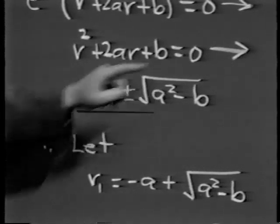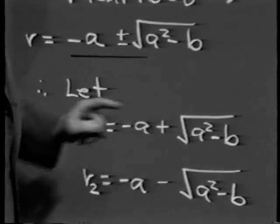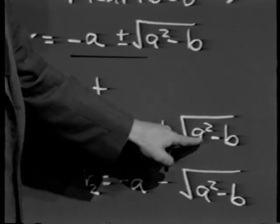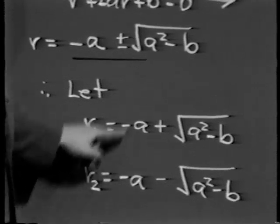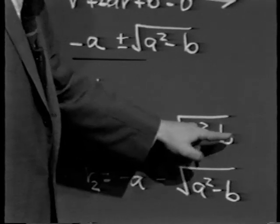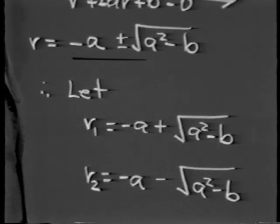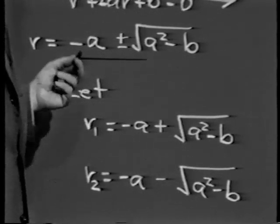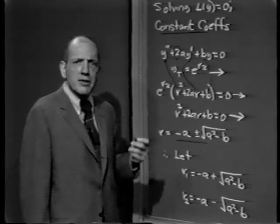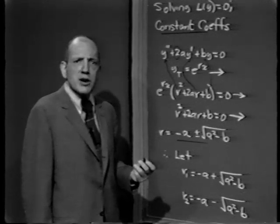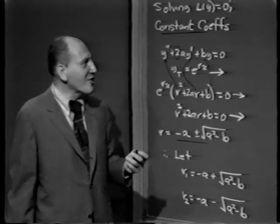In general, this determines two values of r: r1 with the positive square root and r2 with the negative. The nature of a squared minus b determines what the values look like. If a squared minus b is positive, r1 and r2 are unequal real roots. If it's zero, r1 and r2 both equal negative a. If it's negative, r1 and r2 are complex conjugates. I'll summarize the results using the cookbook technique first, giving examples of all three cases, then show why the recipes work.